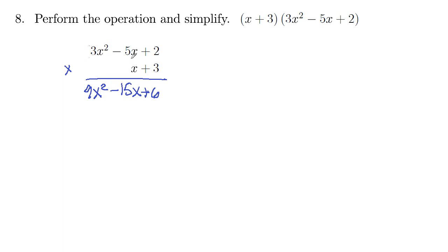And then notice I've lined up x squared column, x column, numerical column. And then next we're going to take the x times each term in the top row. So x times 2, 2x. That's a positive 2x. x times negative 5x would be negative 5x squared. And then x times 3x squared would be 3x cubed.